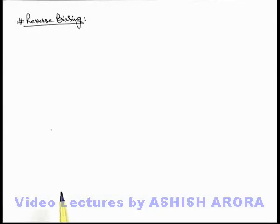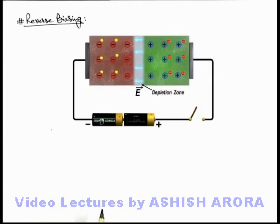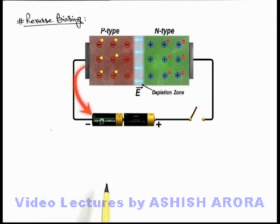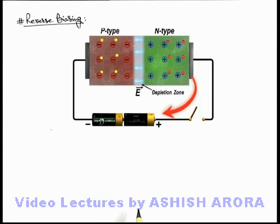Let us now discuss reverse biasing. First we'll discuss this with the help of a realistic situation. Here you can see this picture shows a p-n junction connected to a battery. The p side of the junction is connected to the negative or low potential side of the battery, and the n side is connected to the positive or high potential side of the battery, which we term as reverse biasing.